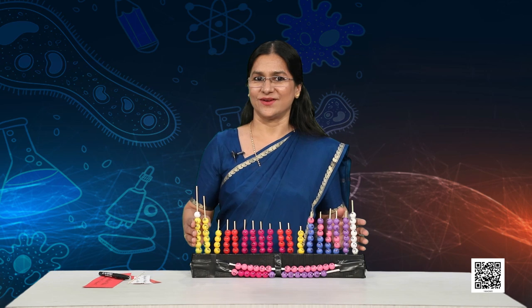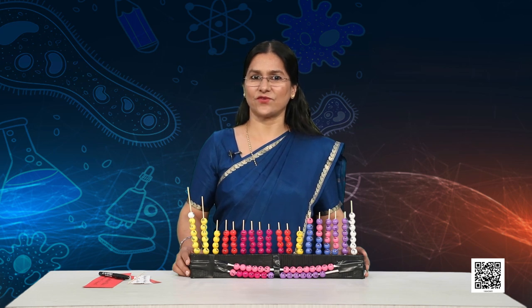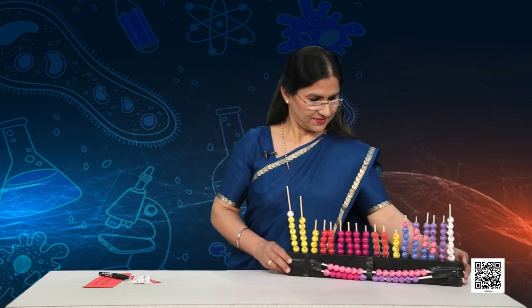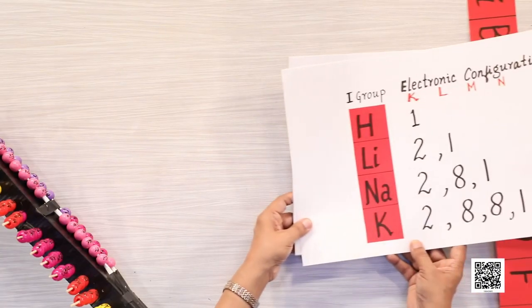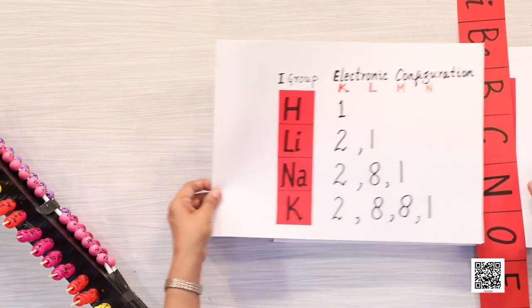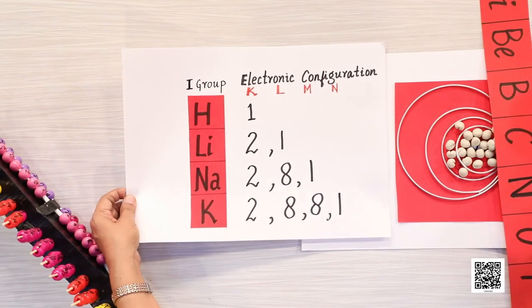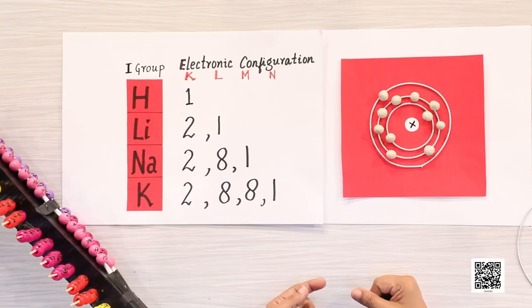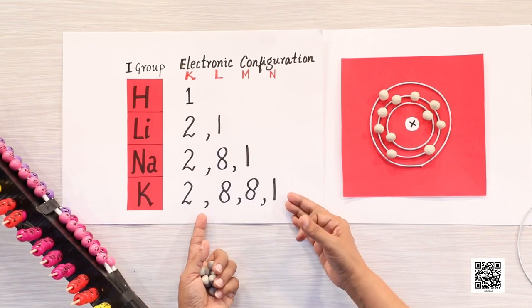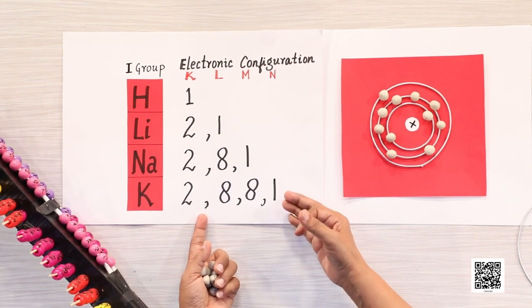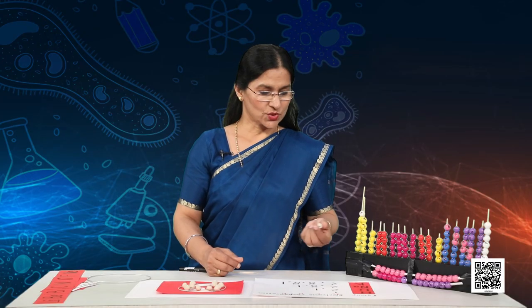Let us now discuss the various trends in the modern periodic table. The valency of an element is determined by the number of valence electrons in the outermost shell. As you can see in the electronic configuration, the valency of all elements in the first group is 1. So what is the valency of potassium, which is also in group 1?